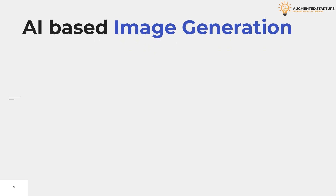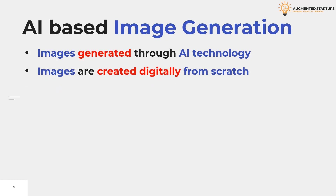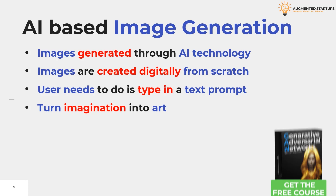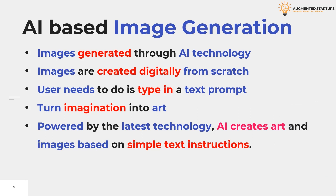So what is AI-based image generation? Images are generated through AI technology. AI images are pictures generated through artificial intelligence technology — basically the images are created from scratch. All the user needs to do is type in a text prompt that describes the desired image. AI algorithms can create original high-quality images by combining and altering existing images. Neural networks can be used to create images that mimic the style of a particular artist.